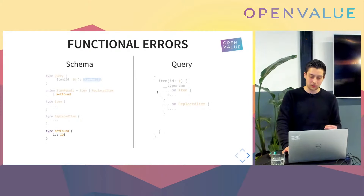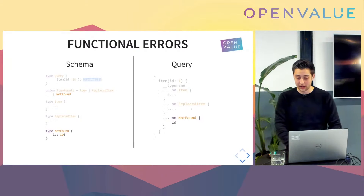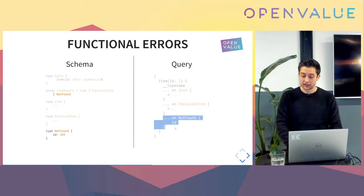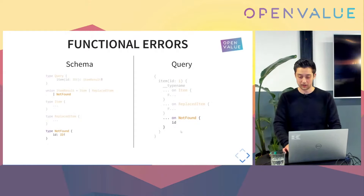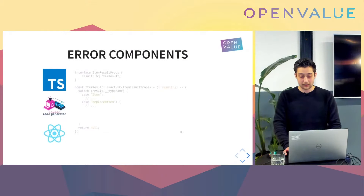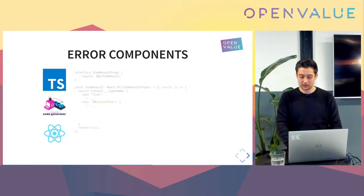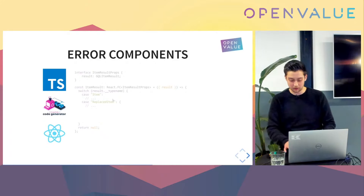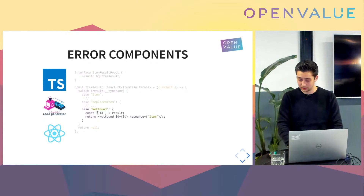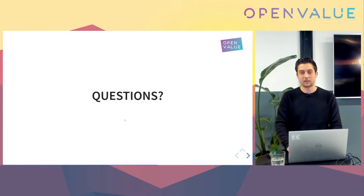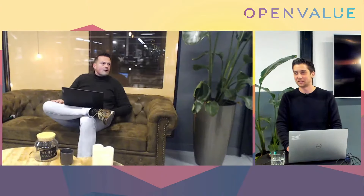Adding new types to the union is very easy for clients to support — they just add a fragment stating if it's not found, give me the ID. In the component, we already had a switch case for item or replaced item; we just add a new case for not found and show a not-found component. That's what I wanted to talk about today — how to build a cool GraphQL schema. Any questions?